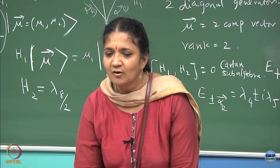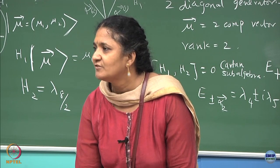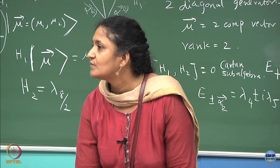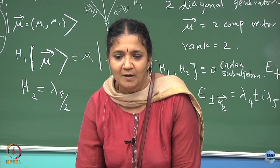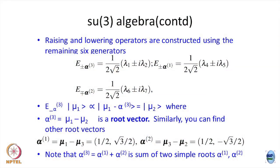Simple roots means I cannot break that into linear combinations of other two roots. Alpha 1 is a simple root, alpha 2 is a simple root, alpha 3 is a positive root. This also can be shown that in any Lie algebra the number of simple roots will be equal to the rank of the algebra.